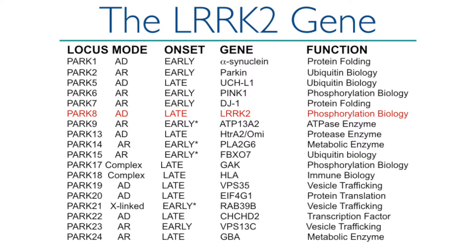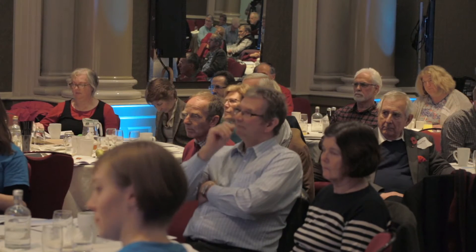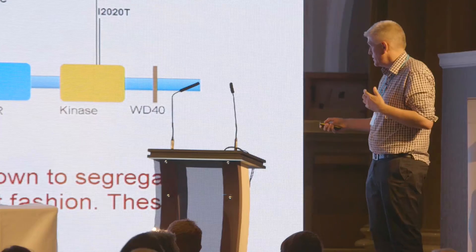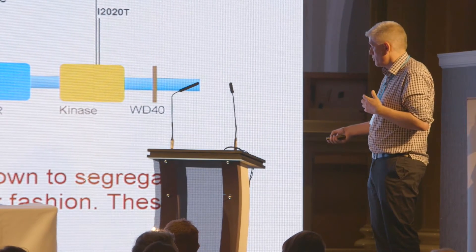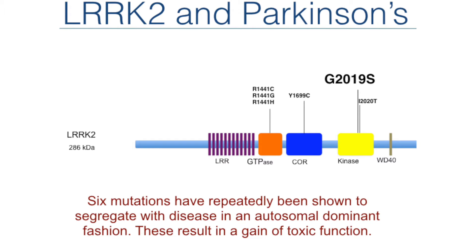There are different types of gene mutations. We all inherit a gene from our mother and from our father, and in the case of LRRK2 it's known as dominant — so if one of your genes has a mutation from either your mother or father, you have a 50% chance of getting the disease. The six mutations segregate with disease in a dominant fashion, so even if you just have one copy of one of these mutations, you're likely to develop Parkinson's disease.